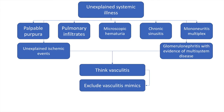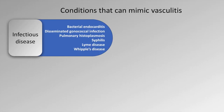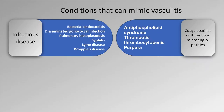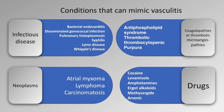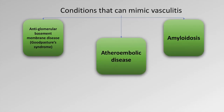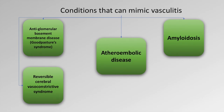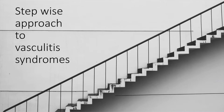After suspecting vasculitis, we must rule out vasculitis mimics and then consider a biopsy or angiogram. Conditions that mimic vasculitis include infectious causes such as bacterial endocarditis, gonococcal infection, histoplasmosis, Lyme's disease, and Whipple's disease. Other mimics include coagulopathies or thrombotic microangiopathies such as anti-phospholipid antibody syndrome, atrial myxoma, lymphoma, carcinomatosis, drugs such as cocaine, levamisole, amphetamines and ergot alkaloids, Goodpasture's disease, amyloidosis, atheroembolic disease, reversible cerebral vasoconstrictive syndrome (RCVS), and sarcoidosis.